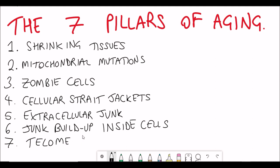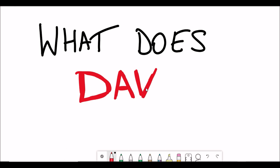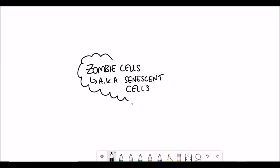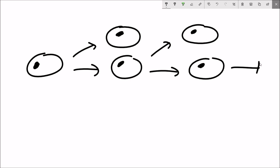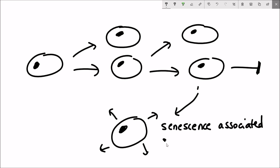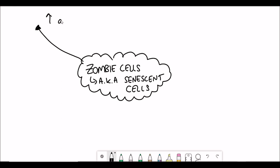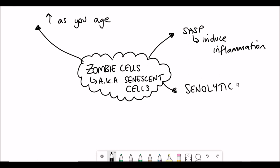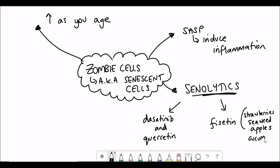Dave's seven pillars of aging include shrinking tissues, mitochondrial mutations, so-called zombie cells, cellular straight jackets, extracellular junk and junk that builds up within cells as well, and lastly telomere shortening. So first let's look at these zombie cells, which are better known as senescent cells. Senescent cells are one of the hallmarks of aging because they accumulate as you age. Senescent cells are cells that have stopped dividing but are still metabolically active.